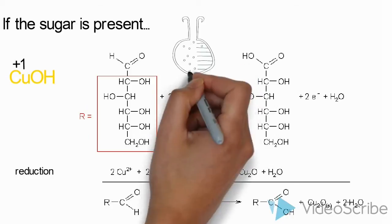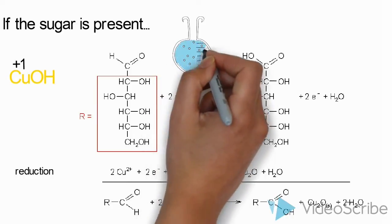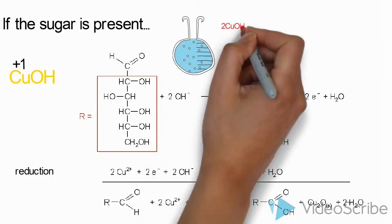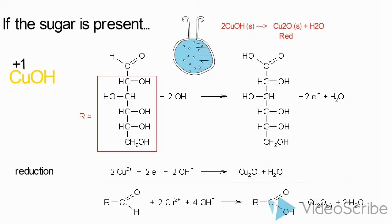Further boiling causes yellow precipitate to change to bright red precipitate of Cu1 oxide. The half and the overall reaction of this redox are as follows.